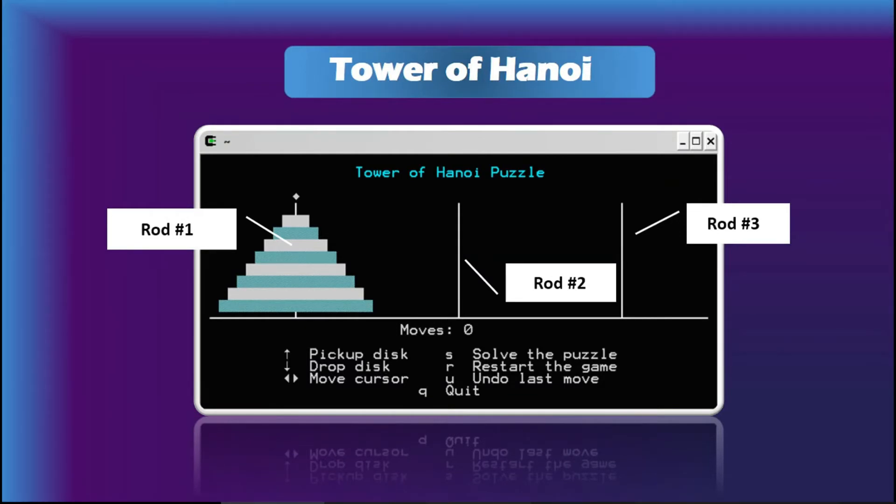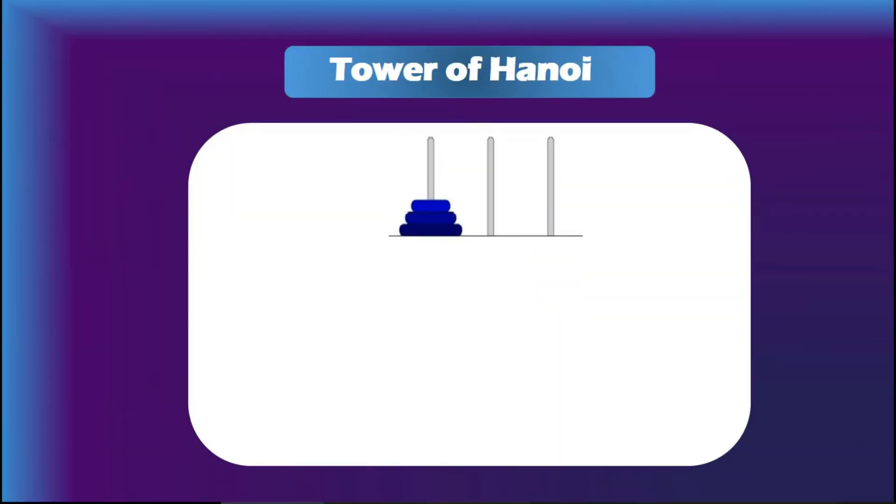So to find a recurrence relation, let's suppose this bottom disc is the nth disc, and on the top of it there are n minus 1 discs. We can say if n minus 1 is the number of moves to move n minus 1 discs, so to move n minus 1 discs to the second rod, the number of moves will be s_{n-1}.